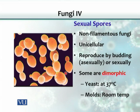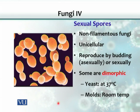Yeasts prefer asexual reproduction. Here you can see a mother yeast cell giving off a small bud. This bud gives rise to another cell and is eventually separated from the mother cell as an independent cell. This is how yeast multiplies when abundant nutrients are present.